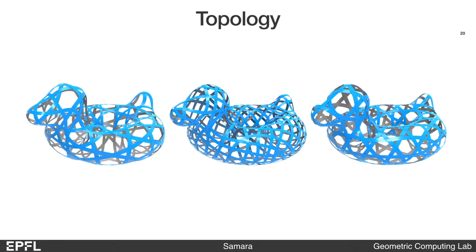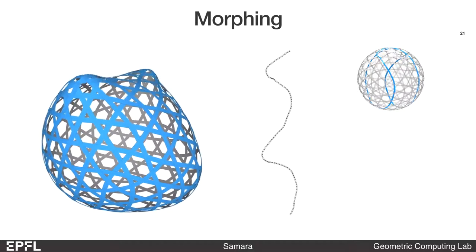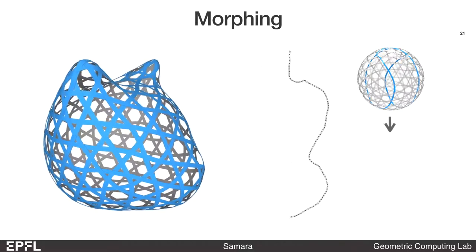Curved ribbon weaving allows us to create multiple weaving patterns for a given target shape, and also allows us to morph a sphere into a torus continuously without changing the topology.